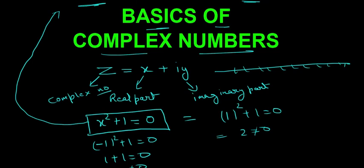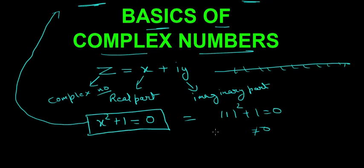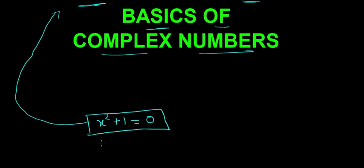So we need a number that will satisfy this equation. Let's try: we rearrange to get x squared equals minus 1, so x is equal to the square root of minus 1.